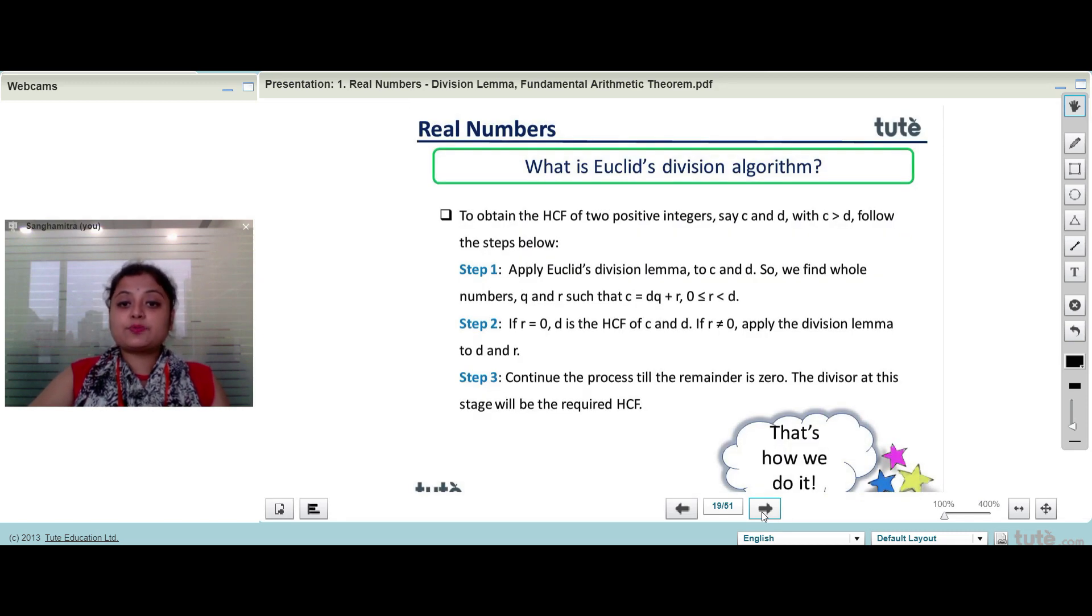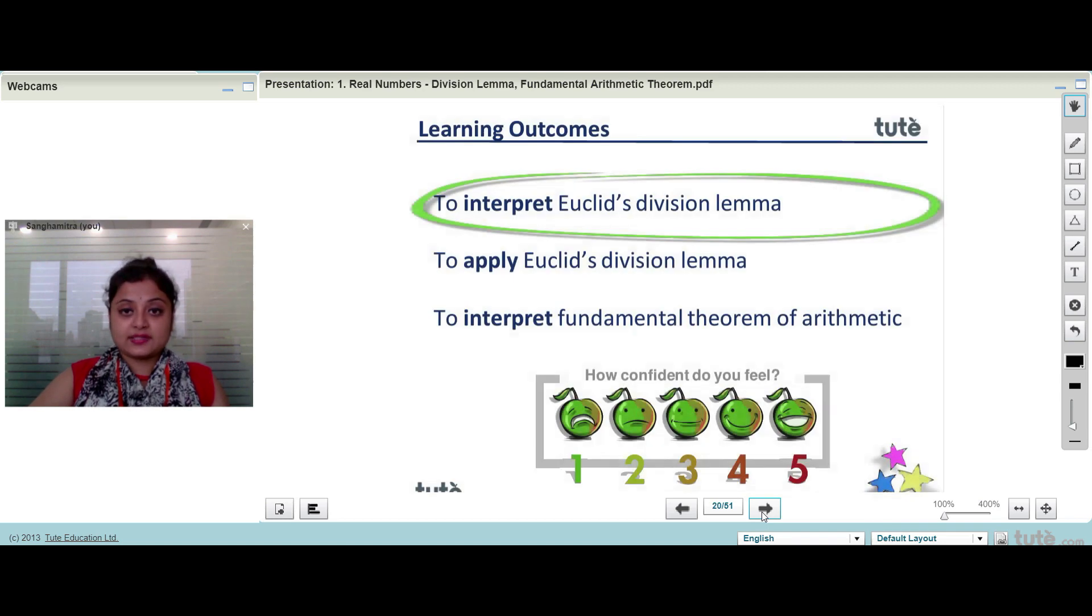Step 3: Continue this process till the remainder is 0. The divisor at this stage will be the required HCF. With this, we have covered Euclid division lemma.